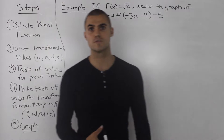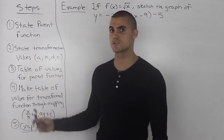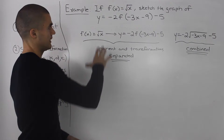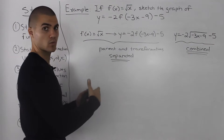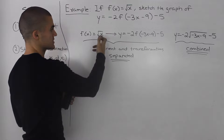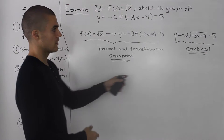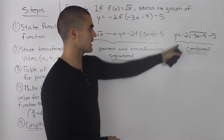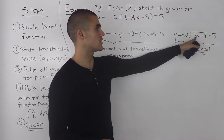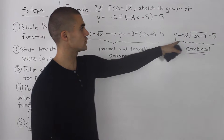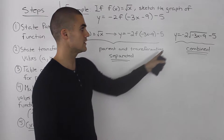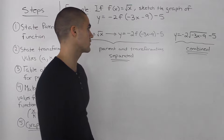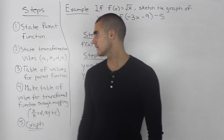As we did in the previous few videos, we're going to follow these steps to graph it. I want to make a note on the form of the question. In this case, the parent function and the transformations were separated, so it's easy to tell that the parent function is just the square root of x. However, this represents the same thing with the parent and transformations combined: negative 2 root of negative 3x minus 9, minus 5. If the question gave you this combined form, you would have to identify that the parent function is the square root of x.